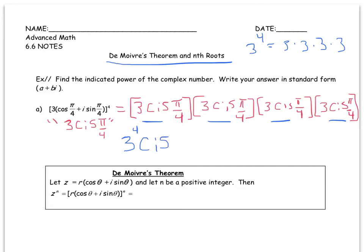And then let's focus on the angle. Well, when we're multiplying complex numbers in trig form, we know we add the angles. So how many pi over 4s do we have? We have 4 of them. So 4 times pi over 4.